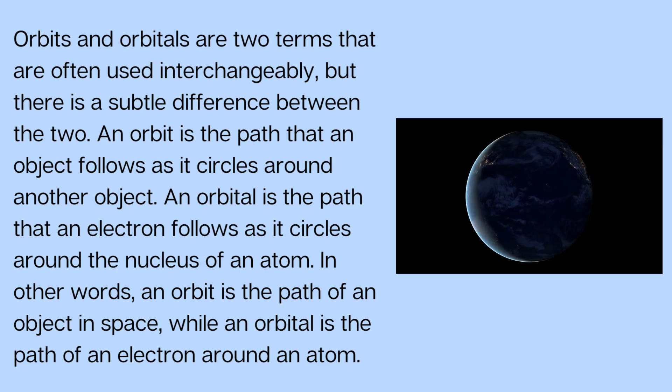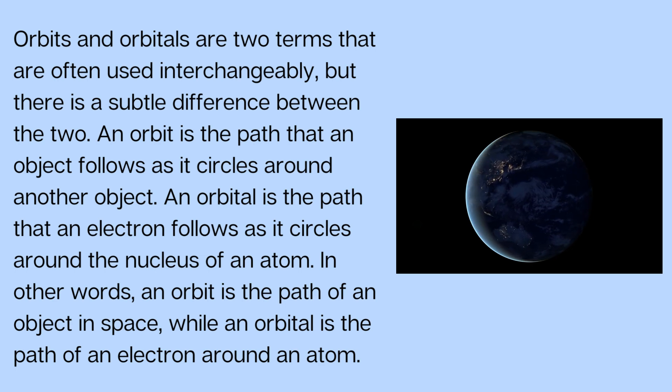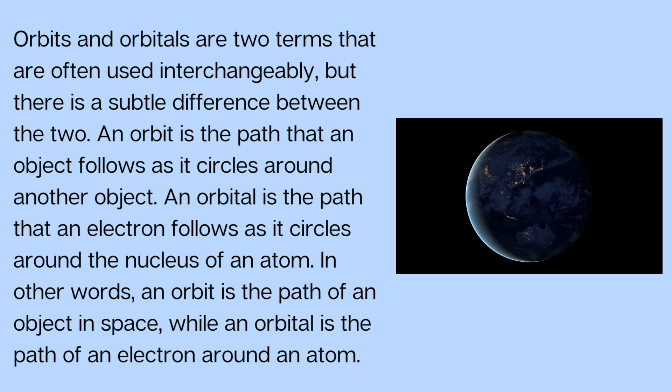In other words, an orbit is the path of an object in space, while an orbital is the path of an electron around an atom.